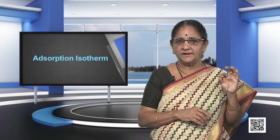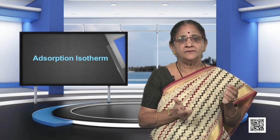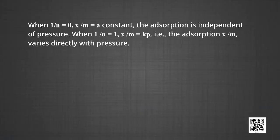When 1/n = 0, x/m becomes a constant — adsorption is independent of pressure. When 1/n = 1, x/m = k·p — adsorption varies directly with pressure. Both conditions are supported by experimental results. However, the experimental isotherms always seem to approach saturation at high pressure, which cannot be explained by the Freundlich isotherm; thus it fails at high pressure.